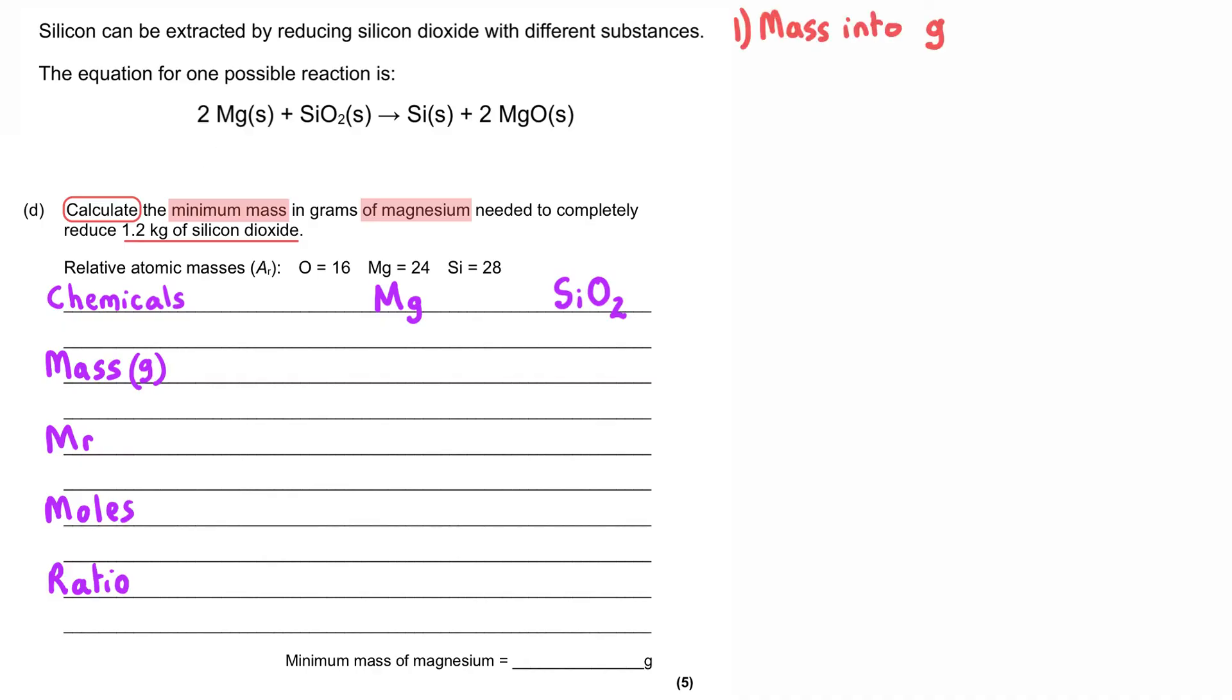The first thing that we need to do is recognize that when working with mass, MR and moles, our masses need to be in grams, and that suits as well because that is what our final answer needs to be in. And so we've been given 1.2 kilograms of silicon dioxide, we need to convert that into grams. A kilogram is 1000 grams, so it's 1000 times bigger than a gram, so we need to multiply our mass in kilograms by 1000, and we get 1200 grams, and that would be our first mark out of five.